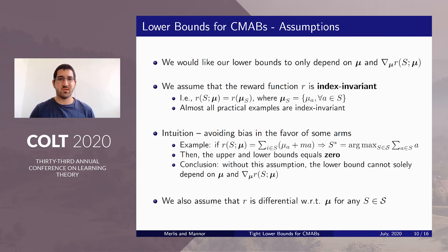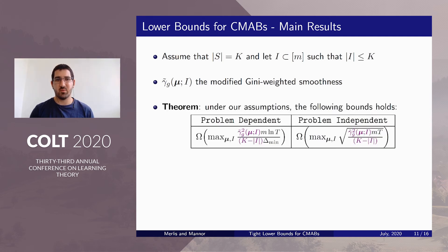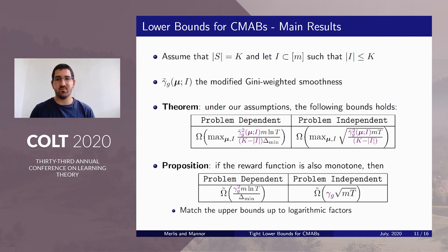We also quite naturally assume that the reward function is differentiable. For our main results, we assume actions are of size K and denote by I a subset of arms of size smaller than K. We work with a modified Gini-weighted smoothness, which is a variant that also depends on the set I. Using this modified Gini-smoothness, we derive lower bounds that depend on it and on the set I. Specifically, if the reward function is also monotone, we can further lower bound this term and get lower bounds that depend on the Gini-smoothness we saw earlier, up to logarithmic factors. These bounds actually match the upper bounds of BCUCB up to logarithmic factors.